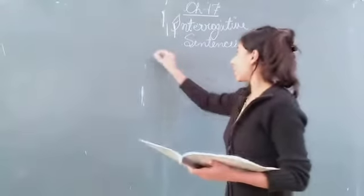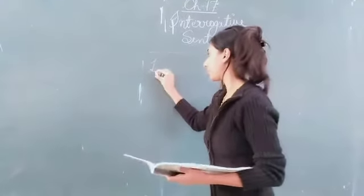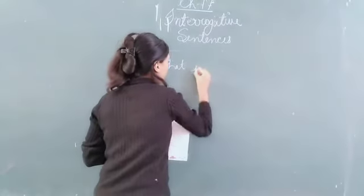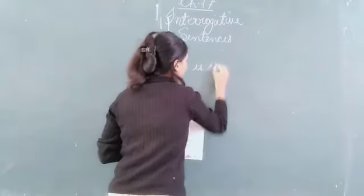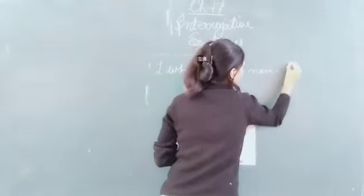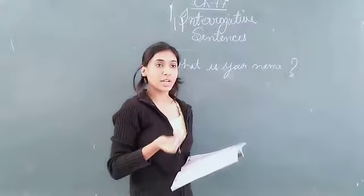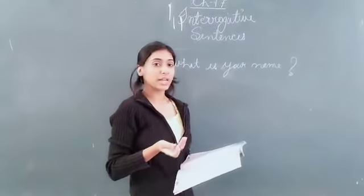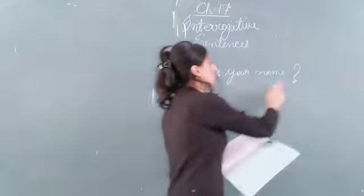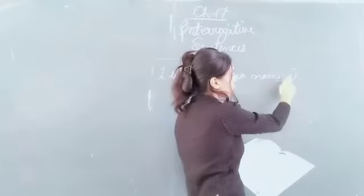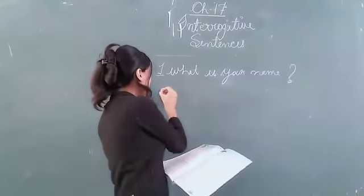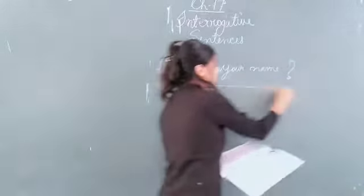For example: 'What is your name?' So we have asked a question — 'What is your name?' That is an interrogative sentence. This is an interrogative sentence.